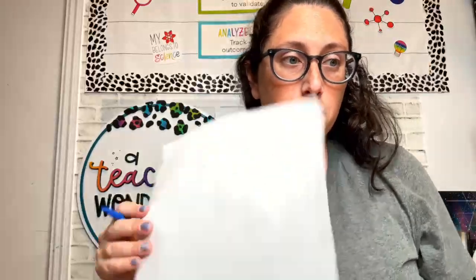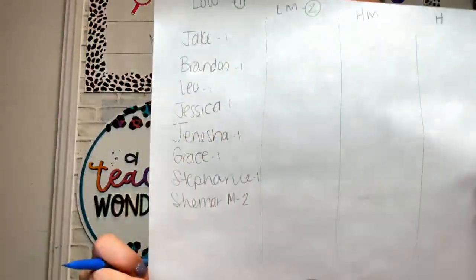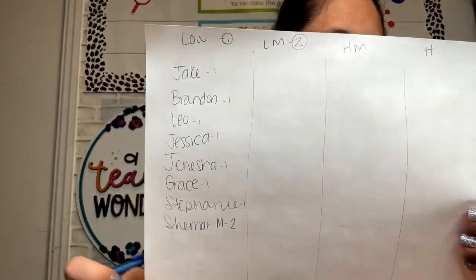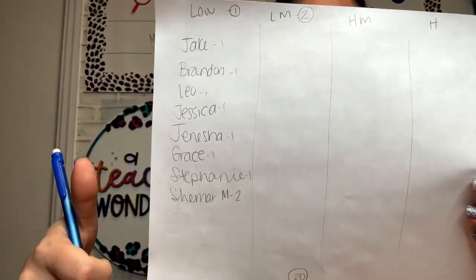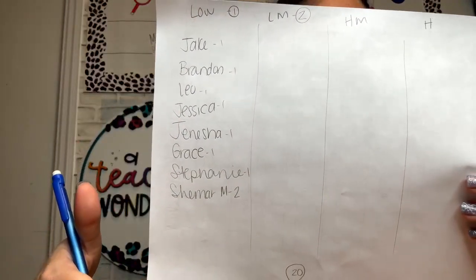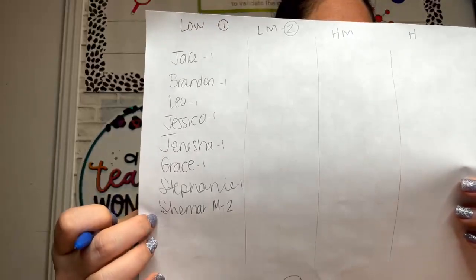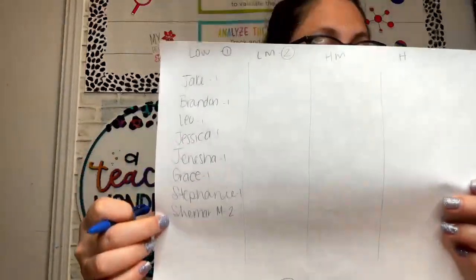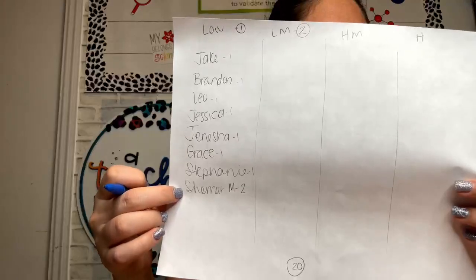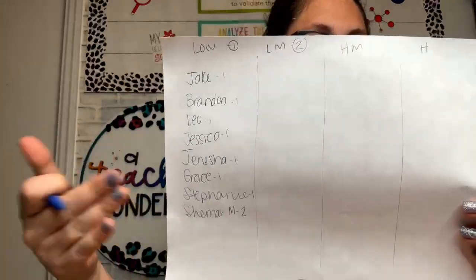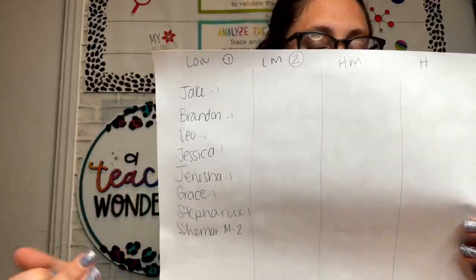I don't have real students, so I just made up names — first names that popped in. I have seven kids here that are ones, and I put Shamar Moore as a low two because I knew he could be swayed either way. There are moments where he's on and moments where he's not, so I'm going to put him as a low two.